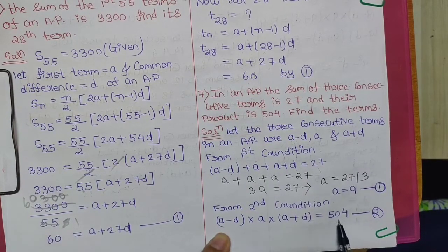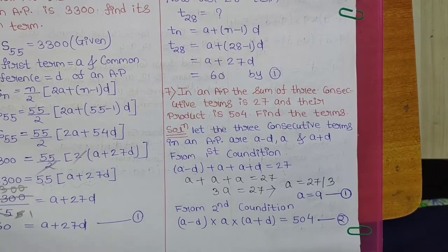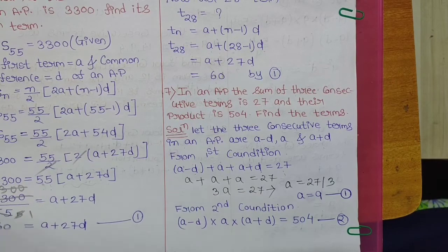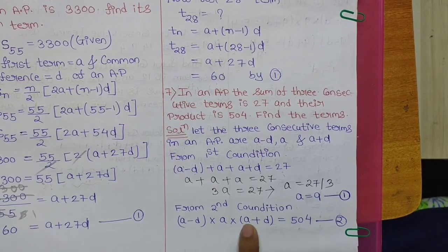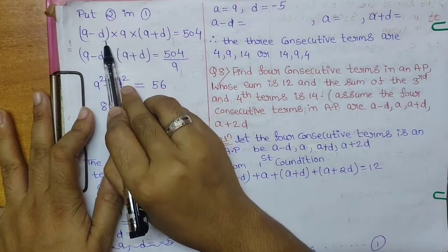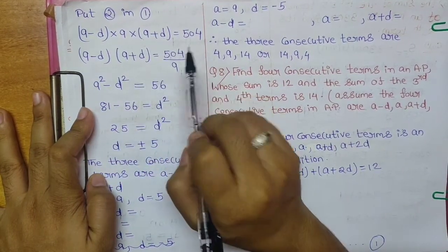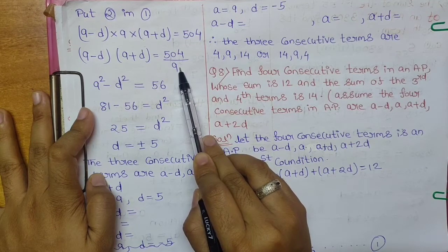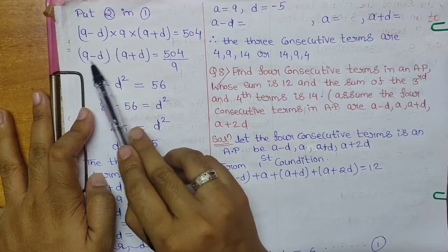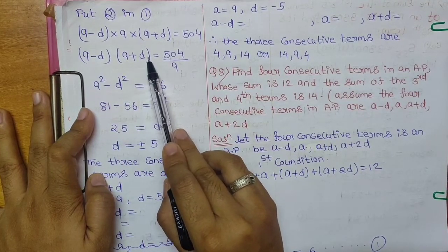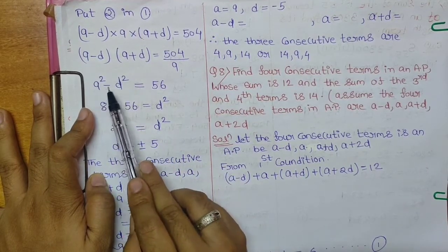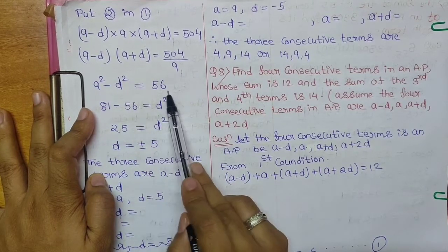The second condition is that the product of the three terms equals 504: (A − D) × A × (A + D) = 504. With A = 9 from Equation 1, substitute: (9 − D) × 9 × (9 + D) = 504. Shift 9 to the other side: (9 − D)(9 + D) = 504/9 = 56. Notice this is the identity (A − B)(A + B) = A² − B², so 9² − D² = 56.